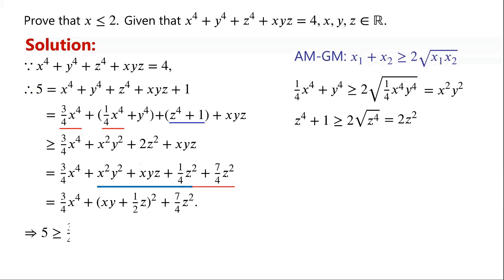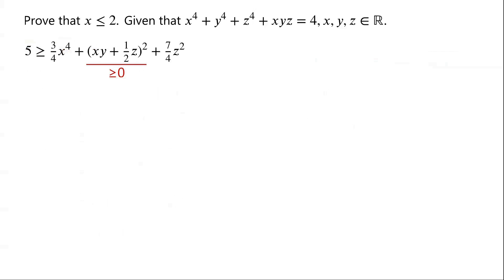So now we have: 5 is greater than or equal to three-quarters times x to the power of 4, plus the quantity xy plus one-half z, all squared, plus seven-quarters times z squared. We know that the quantity xy plus one-half z, all squared, is greater than or equal to 0, and seven-quarters times z squared is greater than or equal to 0. So 5 is greater than or equal to three-quarters times x to the power of 4.